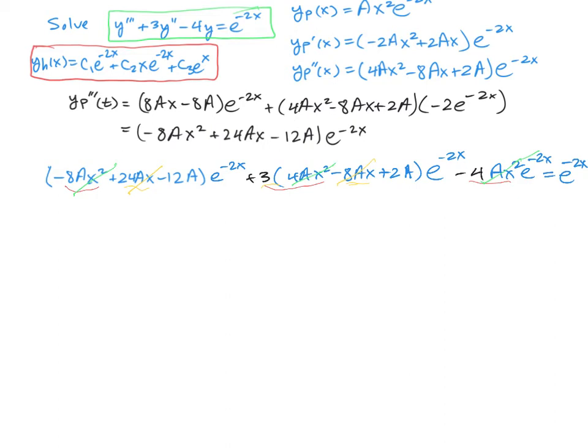We're left with negative 12ae^(-2x) and 6ae^(-2x), which must equal e^(-2x). Combining like terms: negative 6ae^(-2x) equals e^(-2x), so negative 6a equals 1.